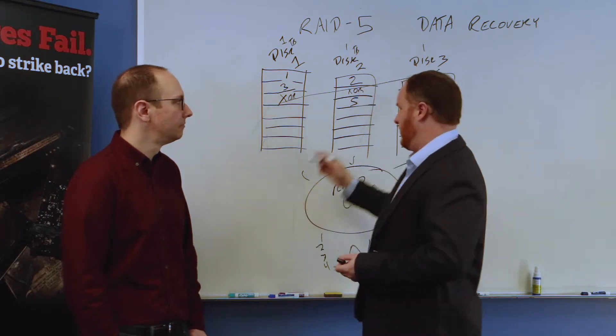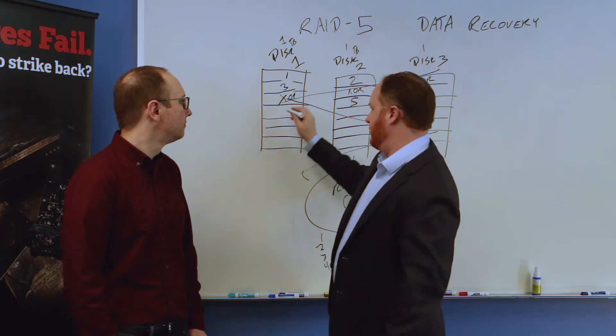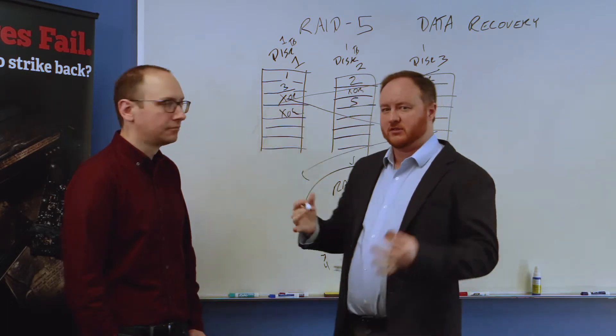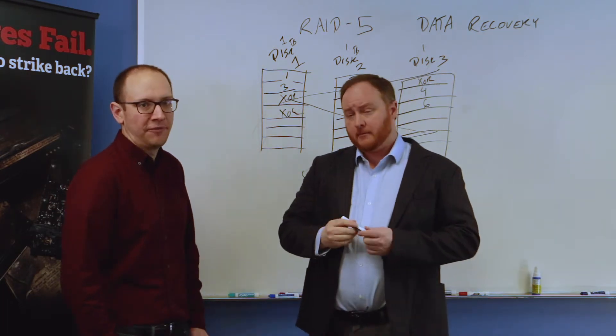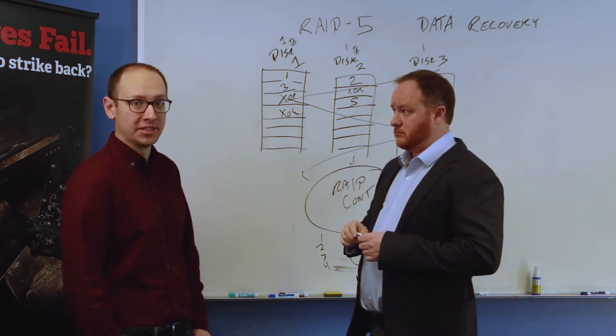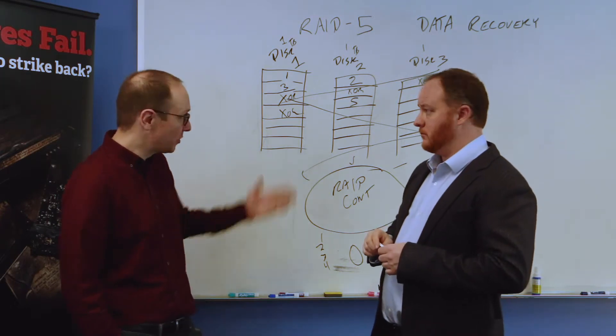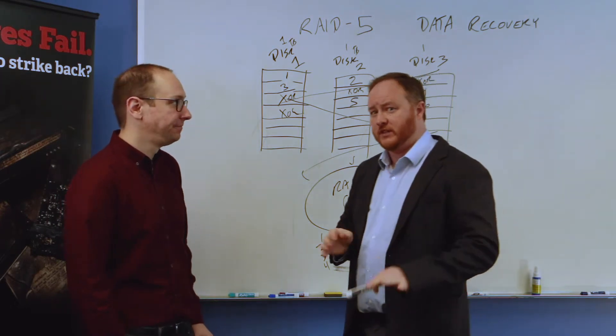And sometimes the XOR bounces back and forth, or they'll do a double XOR here. There's a whole bunch of different things that we see. Again, RAID 5 in general is just any algorithm that allows you to lose one drive and still keep running. So you are free to implement that however you choose. The most common way is with XOR parity.